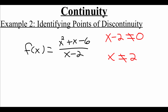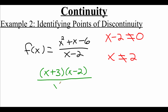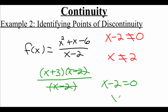Going back to the function, there's actually a way to show this removable discontinuity. I'm going to factor the top of my fraction. The numerator x² + x − 6 factors into (x + 3)(x − 2), and the denominator is (x − 2). We're able to cancel out the (x − 2) factor, but that doesn't eliminate the domain issue. When you eliminate a factor, it's actually creating that hole in the graph. If we take that canceled factor and set it equal to zero, we know there's a hole in our graph at x = 2.